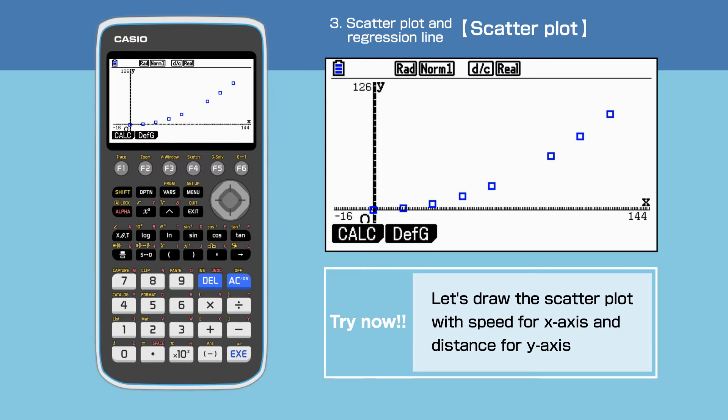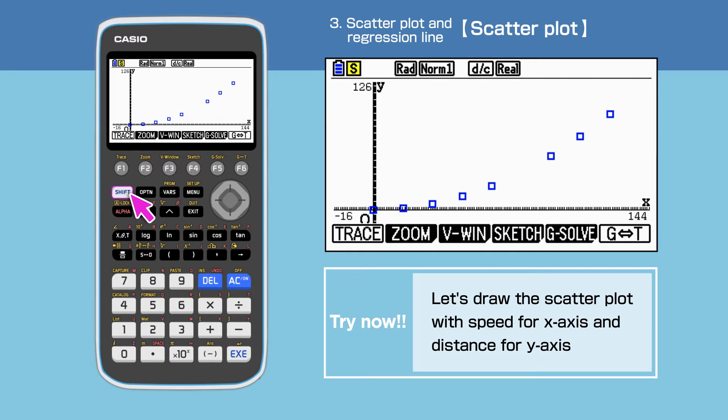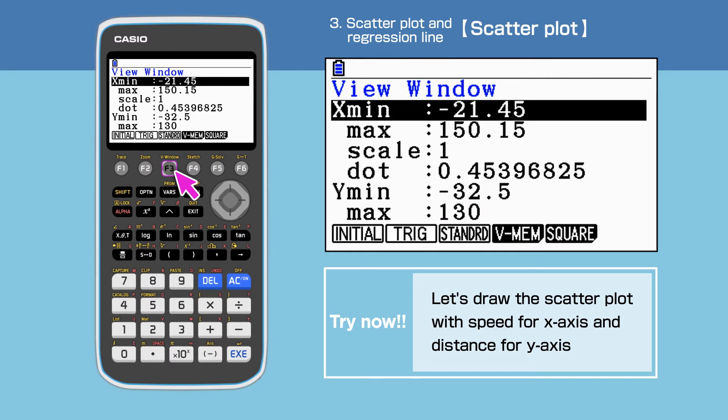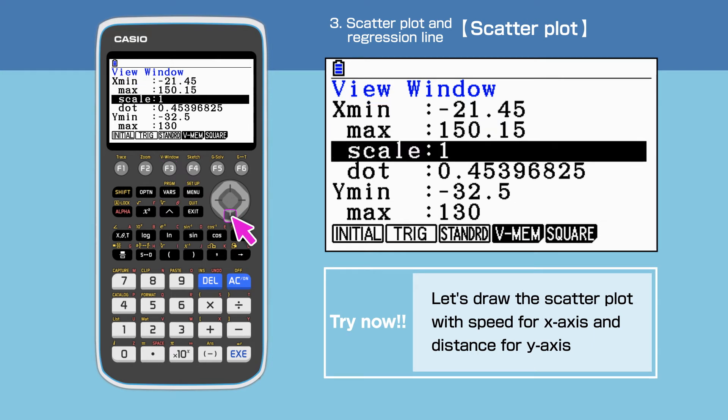It is possible to change the scale of the X and Y axes. To do this, press Shift, then F3, View window, and change the scale to 20 for both the X and Y axes.